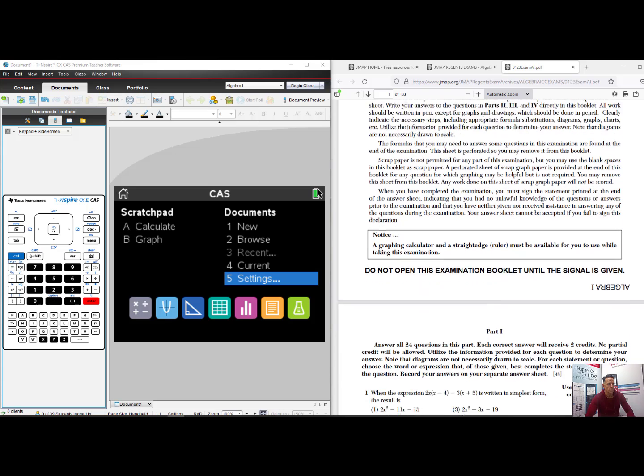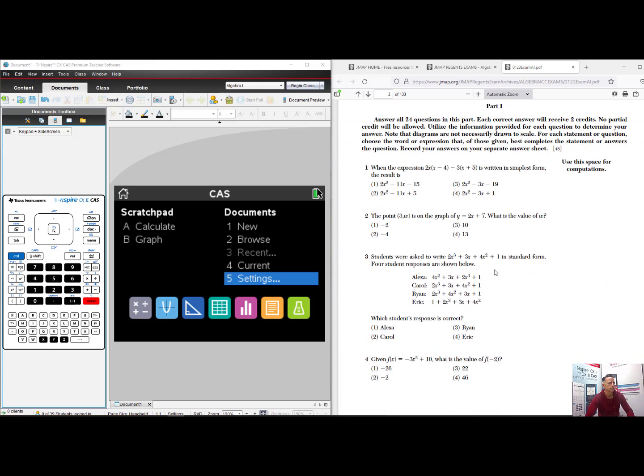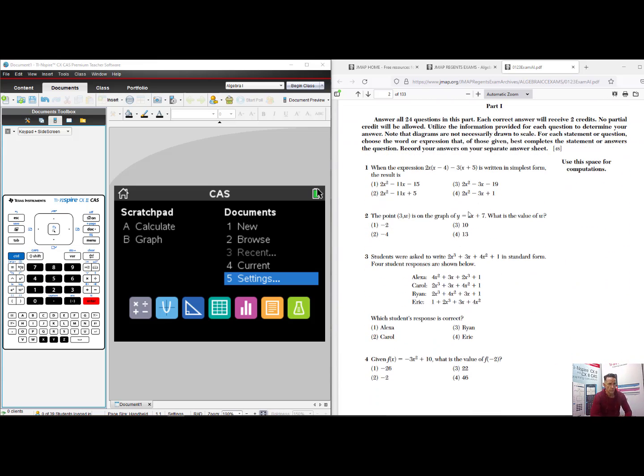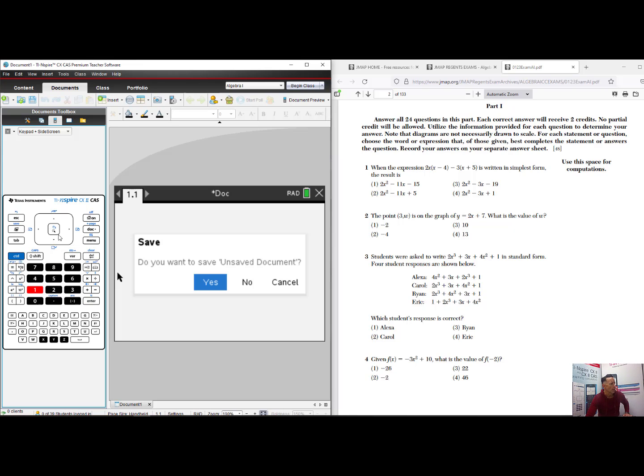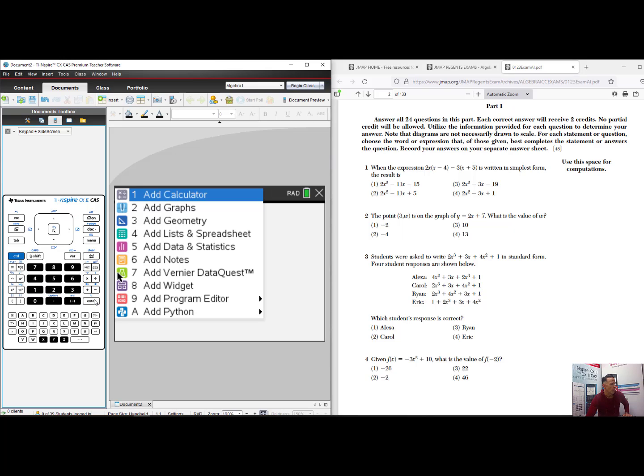So let's look at number 1 from the exam. When the expression 2x times the quantity x minus 4 minus 3 times the quantity x plus 5 is written in simplest form, the result is, and we have 4 multiple choice answers. On my Inspire, I'll select number 1 for New Document. And if there is an option to save the unsaved document, I'll say no. And I'll choose to use it as a calculator.